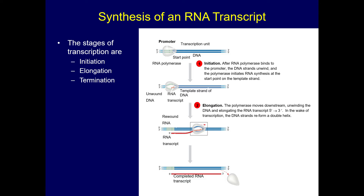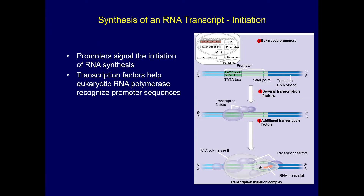During elongation, the polymerase moves down, unwinding the DNA and producing more RNA. The final part, termination, is where the RNA transcript is released and the polymerase detaches. Promoters signal the initiation of RNA synthesis, and transcription factors help RNA polymerase recognize where to start.